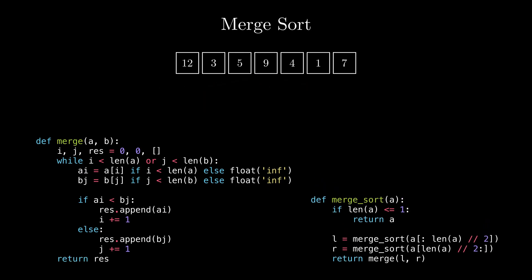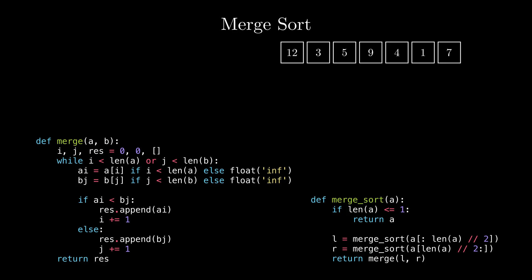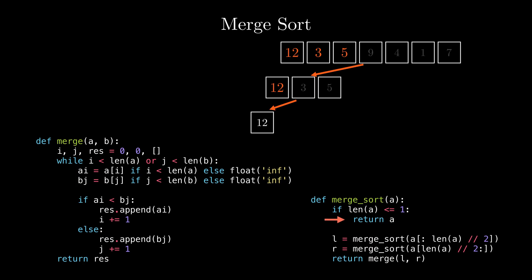Let's simulate the algorithm on this array to understand how each step works and build better intuition around MergeSort. Starting with the unsorted array, we first check if the length is less than or equal to one. As it's not, we split the array into two halves and call merge sort on each part. We call merge sort on the subarray [1, 2, 3, 5]. Since there are more than one elements, we further split it, triggering a call on the first element, which returns immediately since its length equals one.